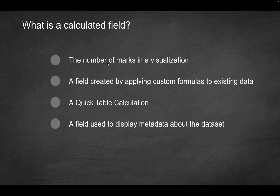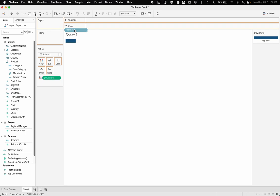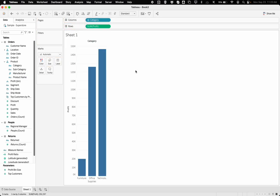So first option, number of marks in a visualization. If I have, we can go back to something like this where we had basically a bar chart broken up by categories. And on the bottom left, if you notice, it'll tell you three marks.